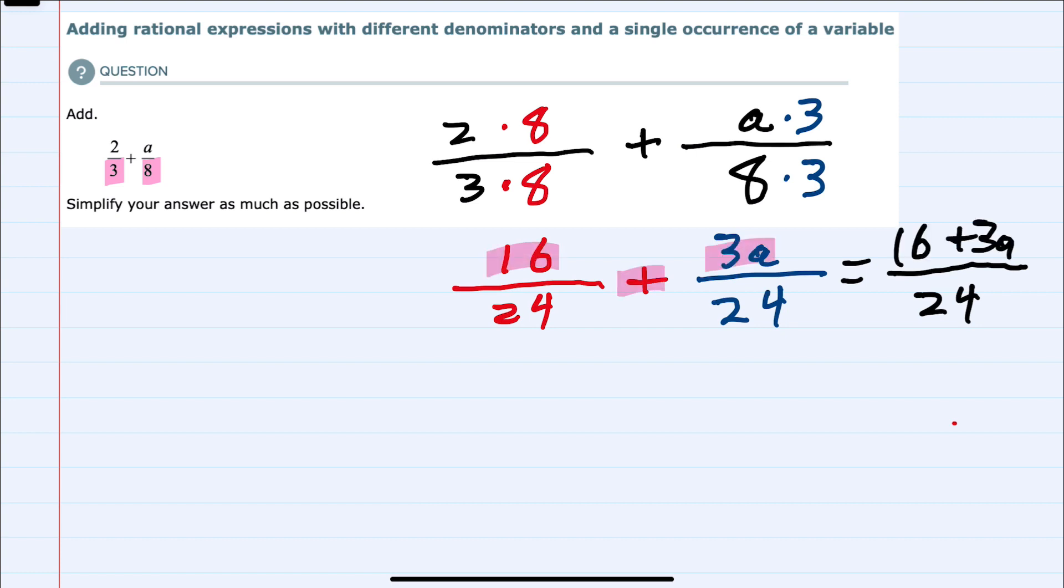The only thing that I could do here is the numerator is not in standard form. It's 16 plus 3a. We usually write the variable first so that would be 3a plus 16. We still have that denominator of 24.